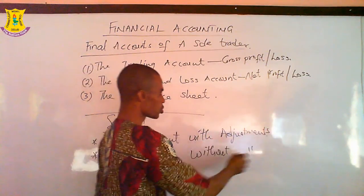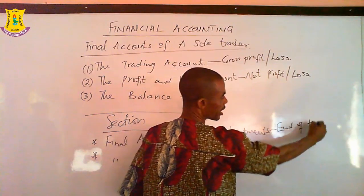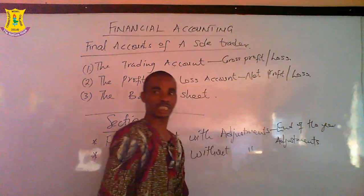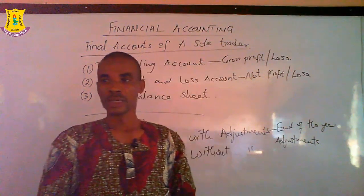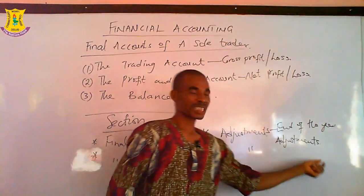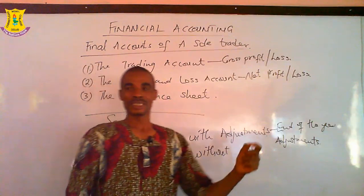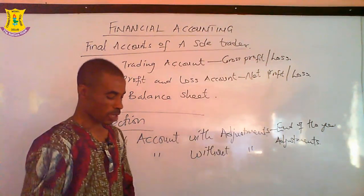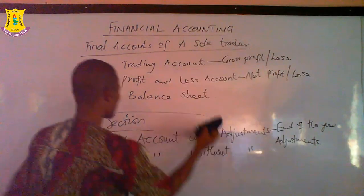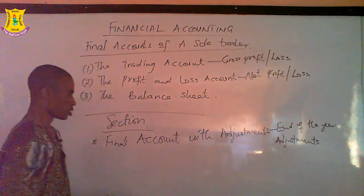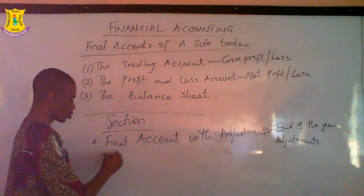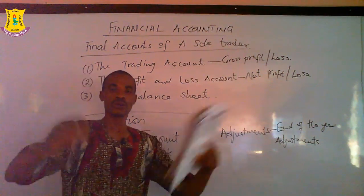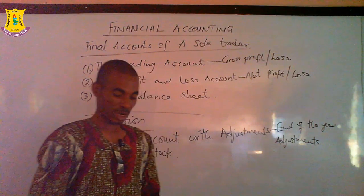When we talk about adjustments, we are referring to what we call end-of-year adjustments. These are adjustments that are necessary at the end of an accounting period. There are certain things that need to be adjusted for us to have a true picture of the business. These include our closing stock, which has to be adjusted so we know the remaining stock at the end of the financial period.